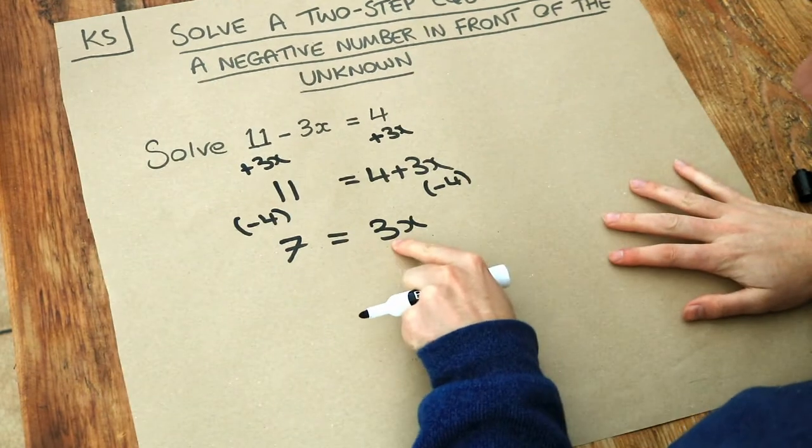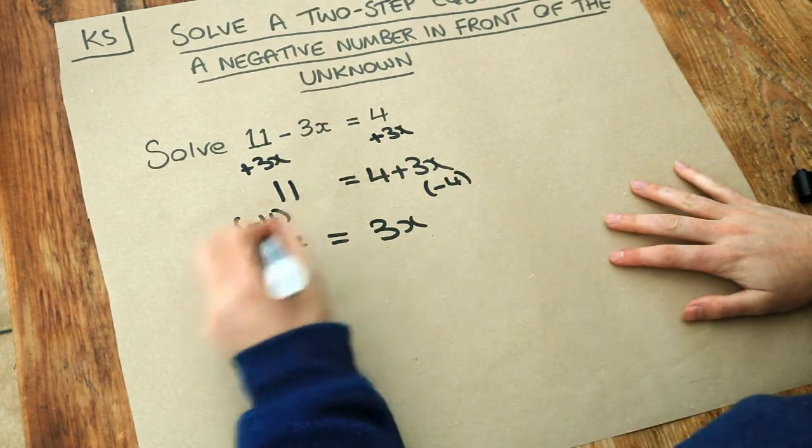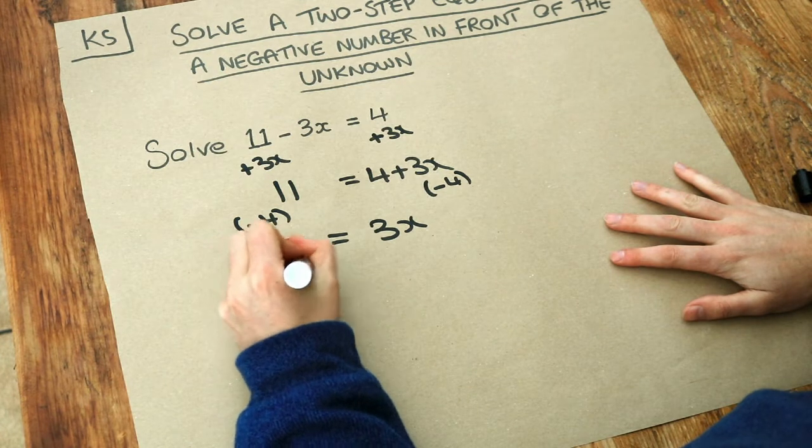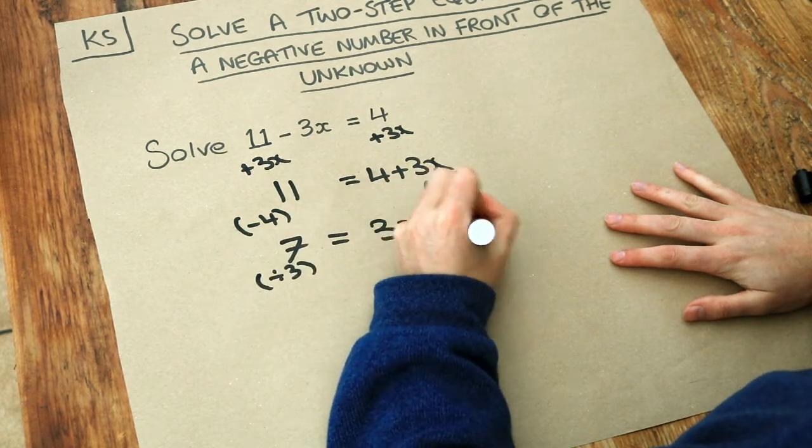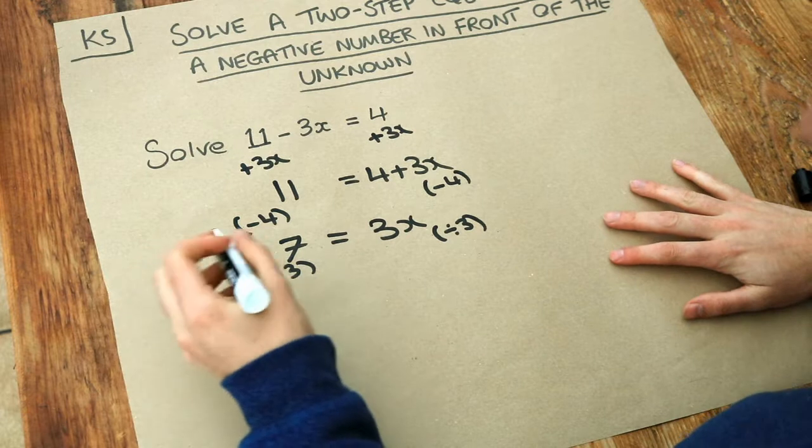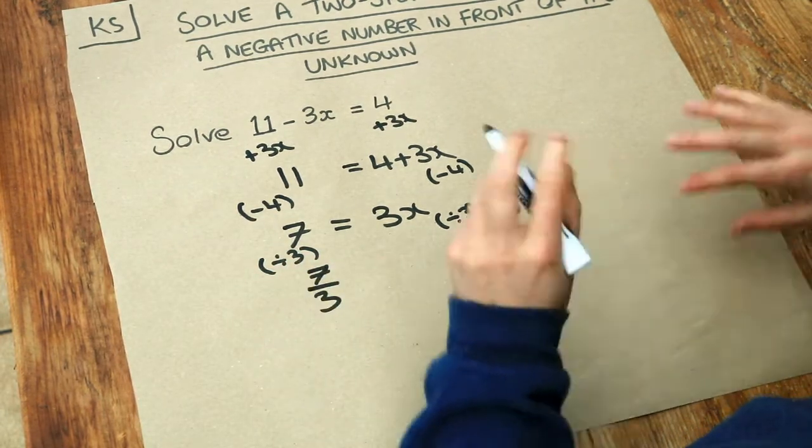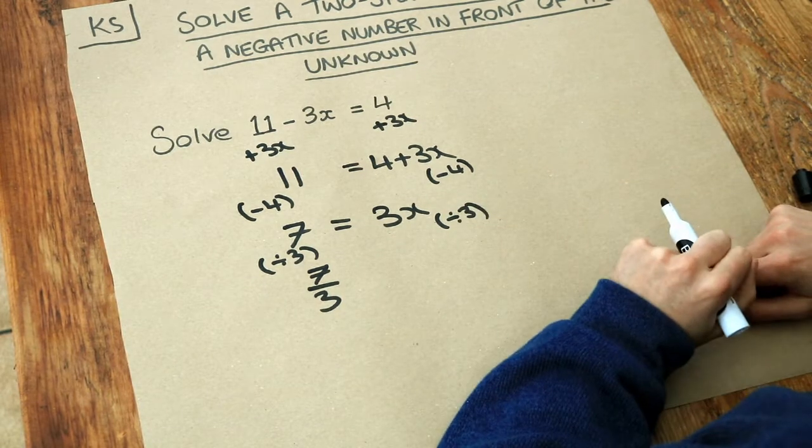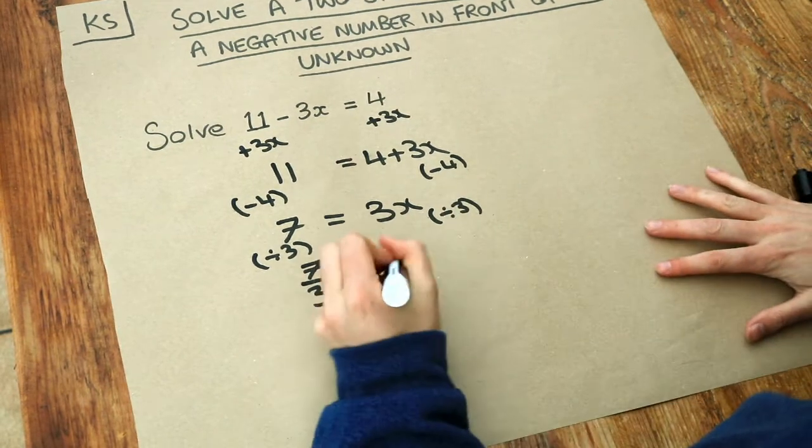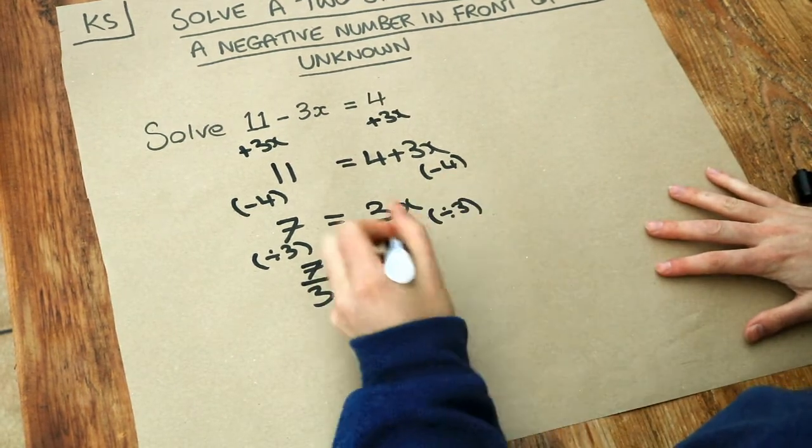Now x has been multiplied by 3, we want to get rid of that times by 3, so we do the opposite. We divide both sides by 3. And then 7 divided by 3, well that's just a fraction. We have 7 over 3. And don't try and give it as a decimal, because it's just going to be a mess, and it will be a recurring decimal. We don't like recurring decimals in general. And the 3x divided by 3 is just x.